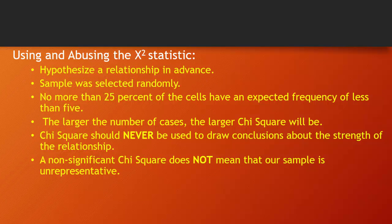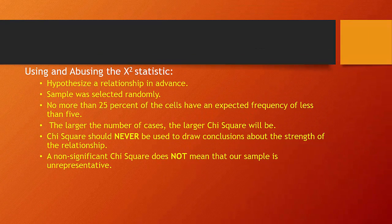Because of this, you can never use chi-square to draw conclusions about the strength of a relationship, since even trivial relationships attain statistical significance if the sample is large enough. We'll cover measures of association specifically designed to tell us about the strength of the relationship. Chi-square is not a test of strength of relationship. A non-significant chi-square doesn't mean you have an unrepresentative sample — it usually just means the relationship is so weak it could have easily been observed by chance.